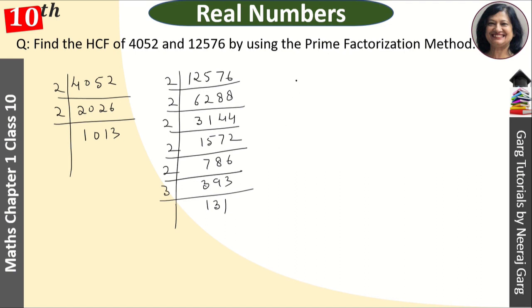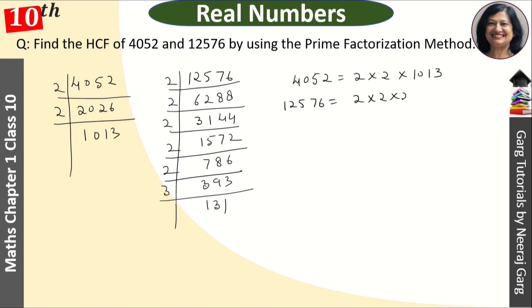So the factors are: 4052 = 2 × 2 × 1013, and 12576 = 2 × 2 × 2 × 2 × 2 × 3 × 131.